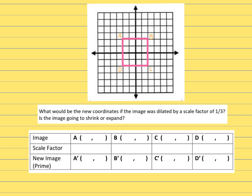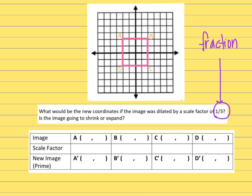Example two has a square labeled A, B, C, D. What would be the new coordinates if the image was dilated by a scale factor of one-third? We have a fraction this time, and if the scale factor is a fraction, the shape is going to shrink. So with a scale factor of one-third, the shape will shrink.